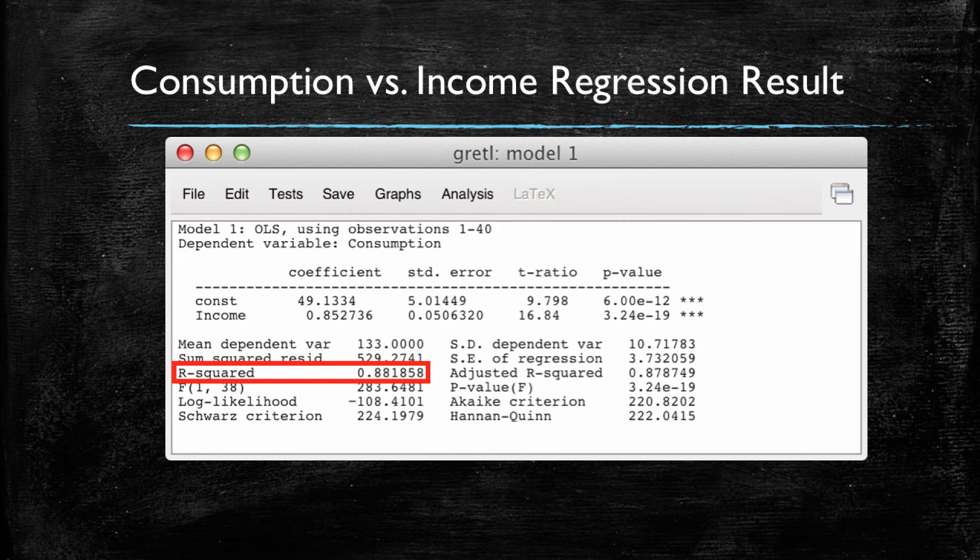But statistical packages such as Gretl give us this value. This is the regression result. And you can see that in the lower section of the output, which we had previously ignored, Gretl reports the R squared. And in this case, we have an R squared of 88.19%, which in general terms is fairly good. However, an important side note is necessary here.